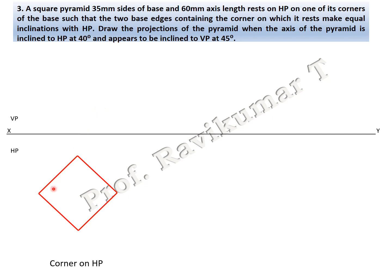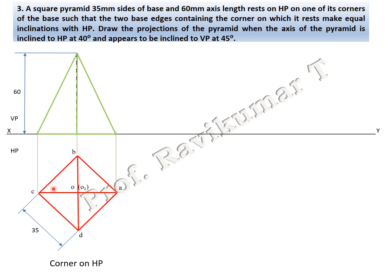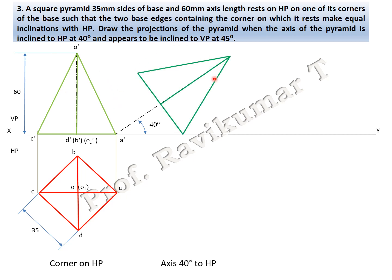For corner condition, the top view looks like a rhombus. Looking from the bottom, all diagonal lines are visible. This is the top view of the square pyramid. For the front view, draw projection lines upward, take 60 mm length, and draw a triangle. The naming: A dash here, D is visible, B is invisible, C is visible. The apex is O and the bottom face point is O1.